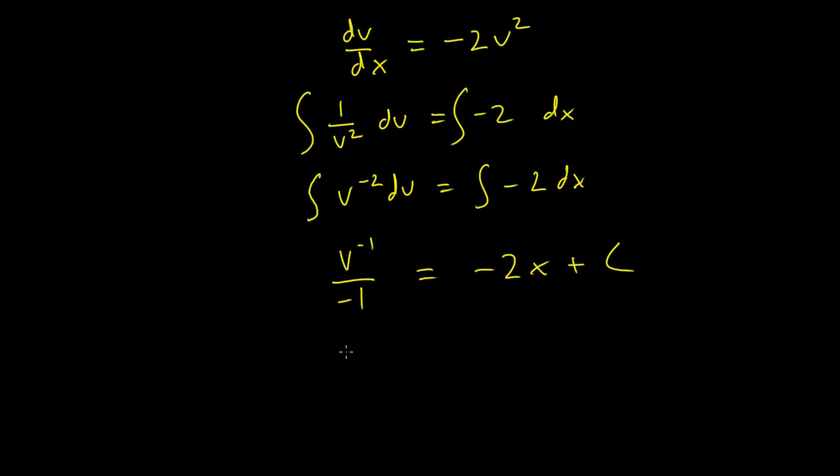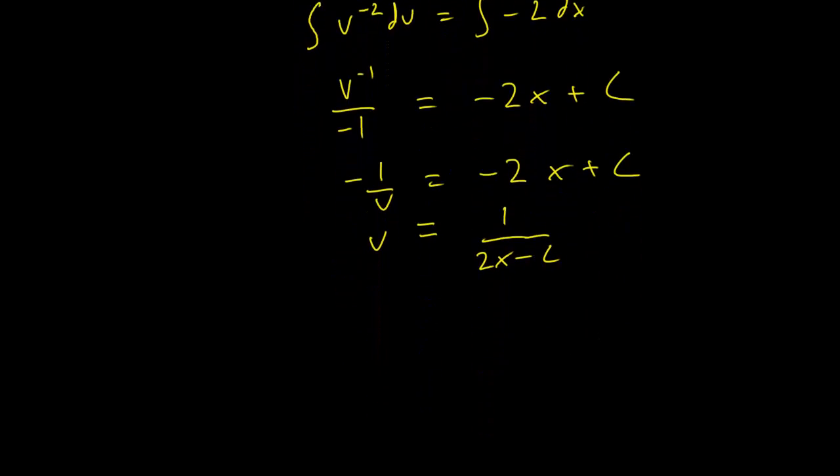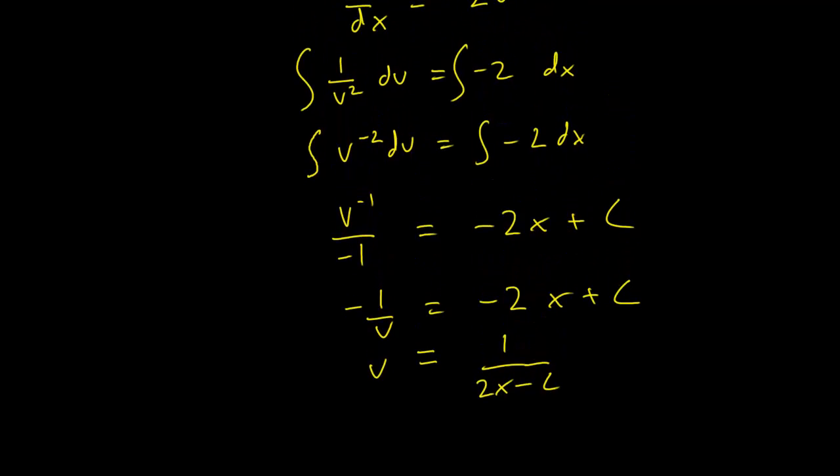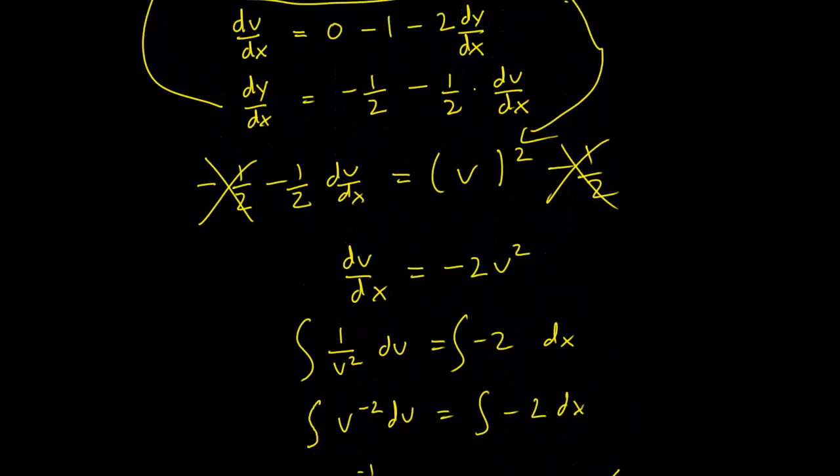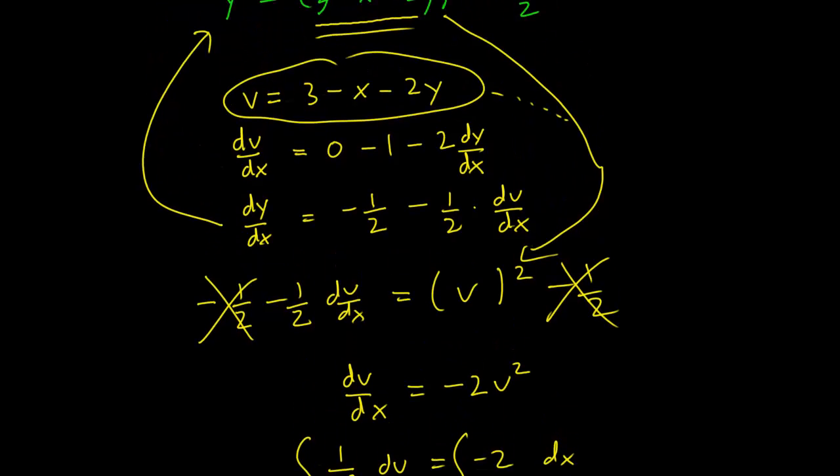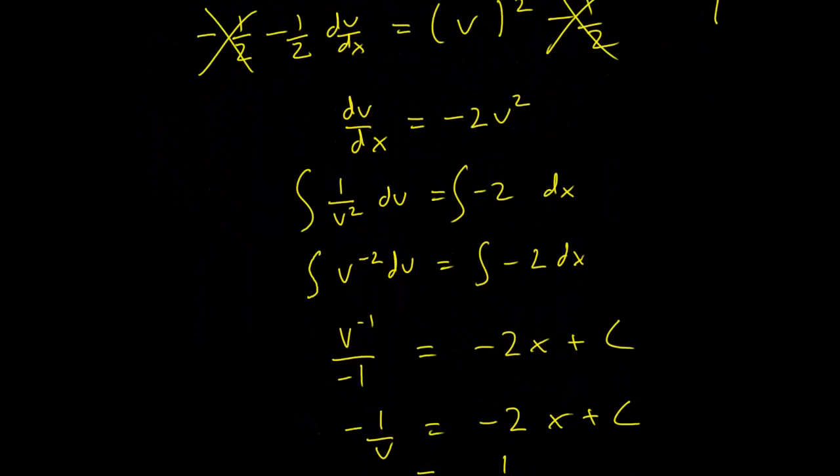And what we have is minus 1 over v equals minus 2x plus c. So v is going to be equal to 1 over (2x-c). The next step is, okay, so we have a general solution for v, but we want to find a solution for y. So we have to substitute this back in.